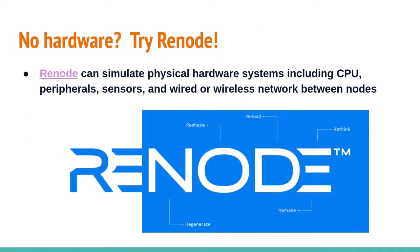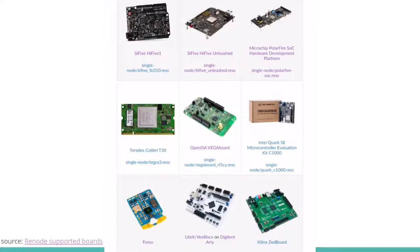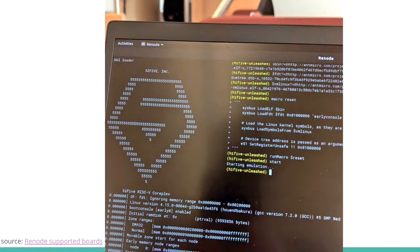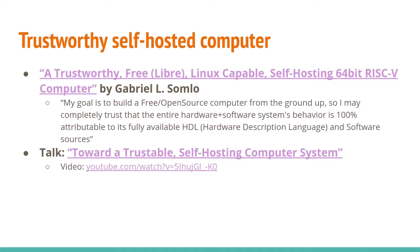If you don't have any hardware, check out Renode from AntMicro — an open source project that can simulate not only the CPU but peripherals, sensors, and even a network of different nodes. It has profiles for different dev boards, so the rare and expensive HiFive Unleash board can be simulated on your laptop. There's also an interesting concept from Gabriel Somlo at Carnegie Mellon: a self-hosted trustable computer — using open source FPGA tools to build a soft core that runs Linux, where those same open source FPGA tools can run inside that Linux, creating a system that can bootstrap itself.